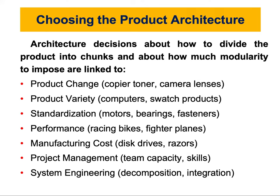Another factor is component standardization, which means using the same component or chunk in multiple products. If each chunk implements only one or a few functional elements, it can be standardized and used across several different products. This is very useful because the production volume will be higher since these are independent chunks performing specific tasks. For example, in motors, bearings and fasteners can be standardized and reused across many models and product varieties.